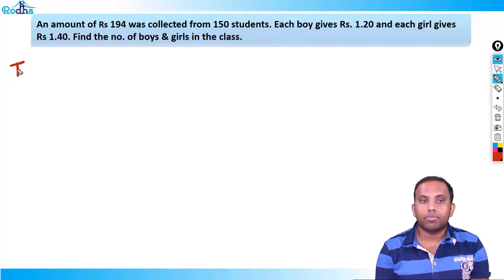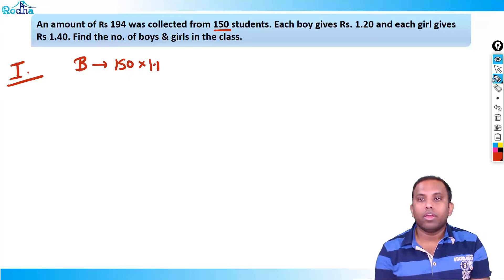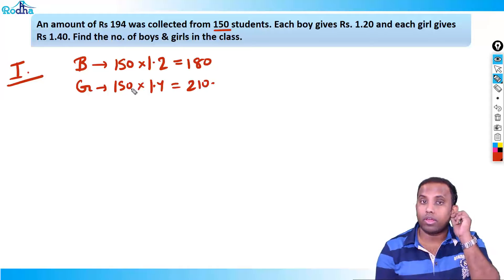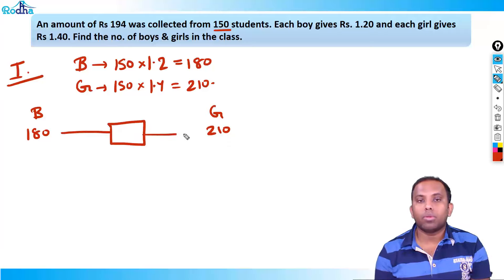Let me solve it very fast by applying allegation. If all 150 students are boys, the collection will be 150 × 1.2 = 180. If all 150 students are girls, the collection will be 150 × 1.4 = 210. But the actual collection is 194.